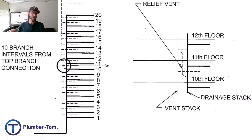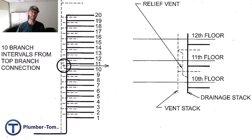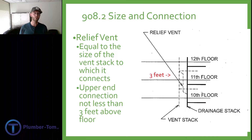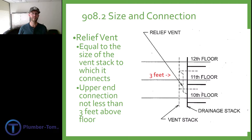Section 908 talks about relief vents. When you get a really seriously tall stack with lots of branch intervals coming into it, and you have a seriously tall vent stack next to that catching all the vents, every so often it's good to have those connect together. Specifically, it requires that happen between the 10th and 11th floor levels. There's going to be a branch that comes off the side of the stack at the 10th floor, heads up to the 11th floor, and then comes over and ties into the vent stack. The relief vent has to be equal to the size of the vent stack to which it connects — so this isn't going to be a small pipe. If it's a six-inch vent stack, we've got a full six-inch pipe coming over from the 10th to the 11th floor.